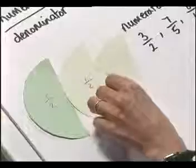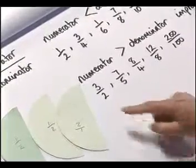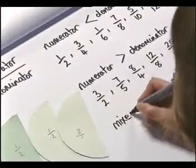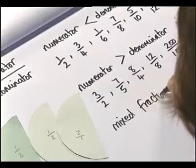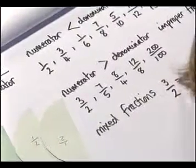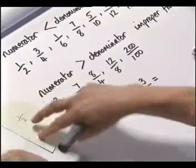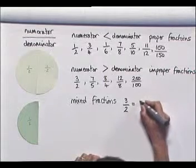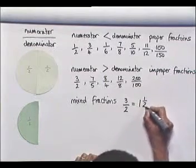So if we take three over two, for example, what we've actually got is three halves. Now improper fractions can be written in this form, or they can be written as mixed fractions. So let's have a look at our three halves: we can put two halves together to make one whole, and we've got one half left over, so that can be written as one and a half. So they're exactly the same, but written in a different form — one is a mixed fraction, and one is a top-heavy or improper fraction where the numerator is larger than the denominator.